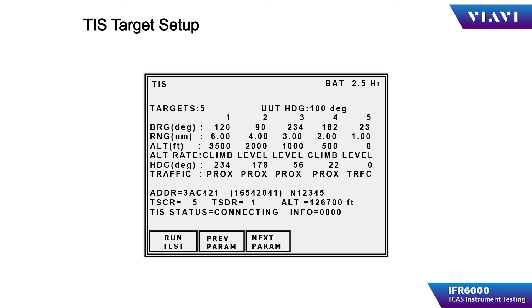The IFR 6000 can simulate a traffic information system broadcast to non-TCAS equipped aircraft. This information is uplinked via a ground-to-aircraft link provided by the IFR 6000, simulating an uplink from the ATC radar.